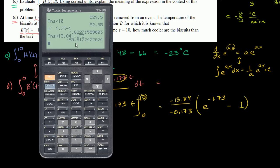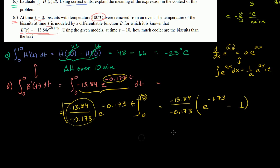So this is our change in temperature for the biscuits — negative 65.82 degrees Celsius. This is our change in temperature for the biscuits. We know they started off at 100 degrees and went down by 65.82 degrees over the 10 minutes.